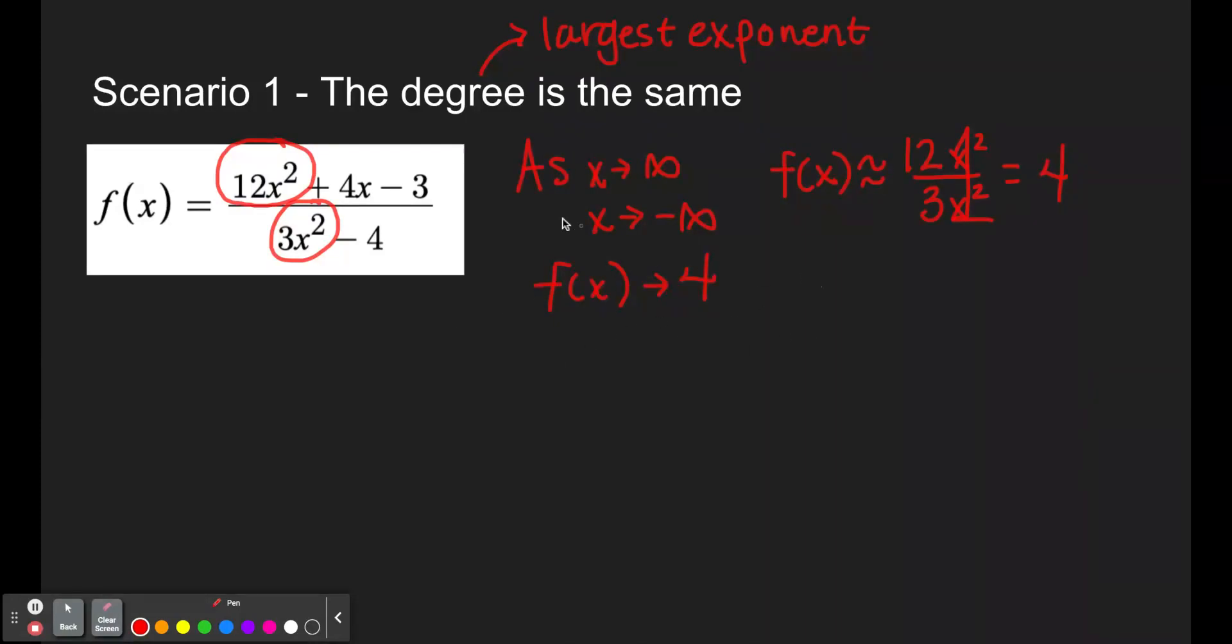That means that the horizontal asymptote is y equals 4. Because as we know, f of x is only approximately this function. It's never actually going to reach that value of 4 because we are never actually going to reach infinity. Therefore, it's going to cause a horizontal asymptote.